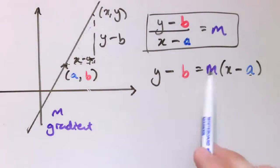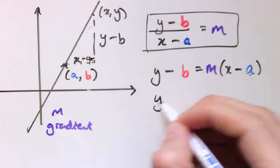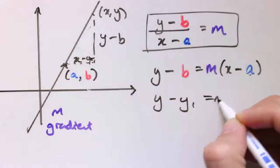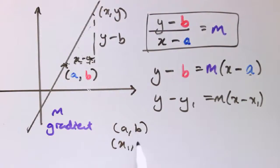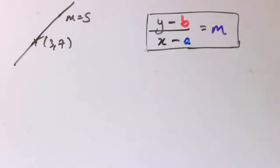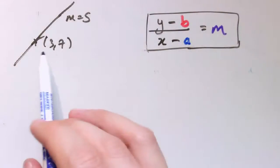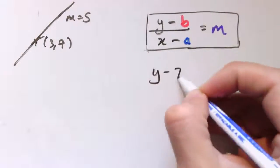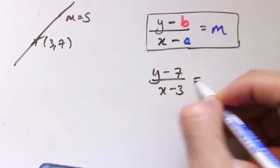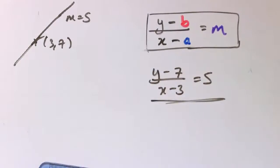Sometimes you see this written as y minus y1 equals m times (x minus x1), where x1 and y1 are the coordinates of the known point — they're just numbers. So if I know the line goes through (3, 7) with gradient 5, I can simply write (y minus 7) divided by (x minus 3) equals 5. If you're not asked to put it in a particular form, that's a perfectly good equation of a straight line.